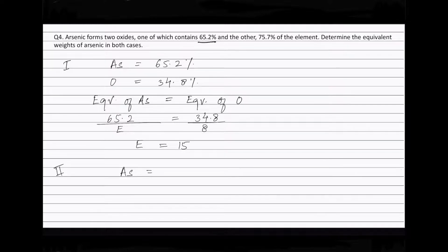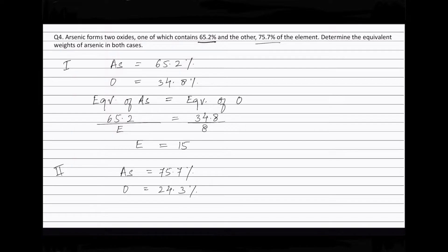In the second oxide, the percentage of arsenic is 75.7%. Therefore, the percentage of oxygen is equal to 24.3%. In this oxide also, equivalent of arsenic will be equal to equivalent of oxygen. Therefore, we can write 75.7 divided by E, where E represents the equivalent weight of arsenic, is equal to 24.3 divided by 8, where 8 is the equivalent weight of oxygen.